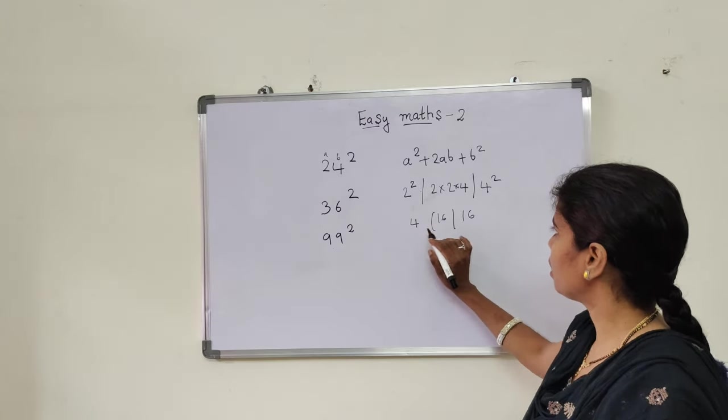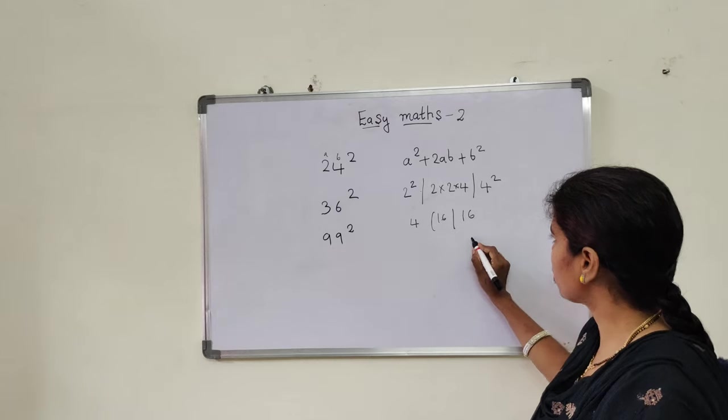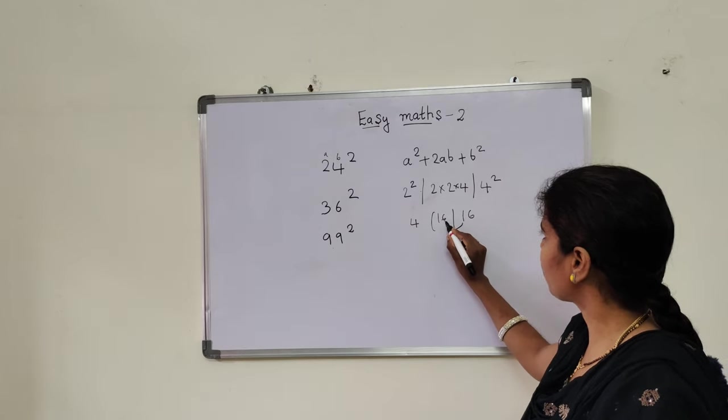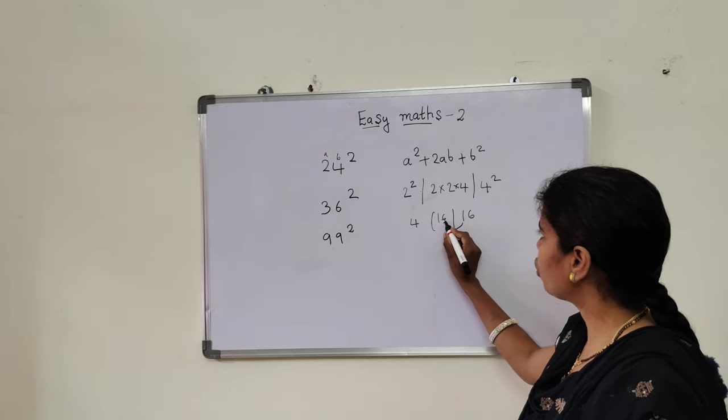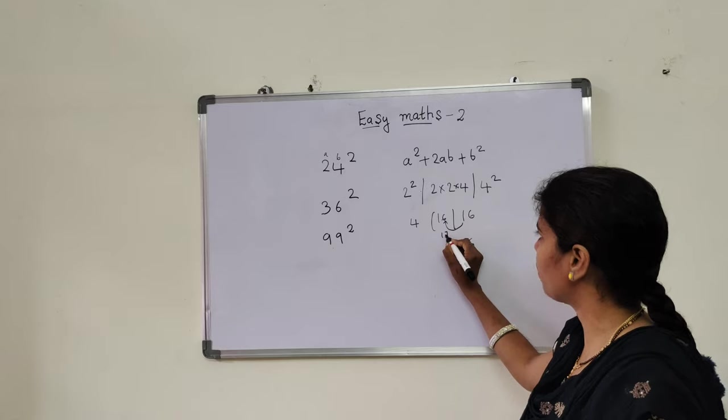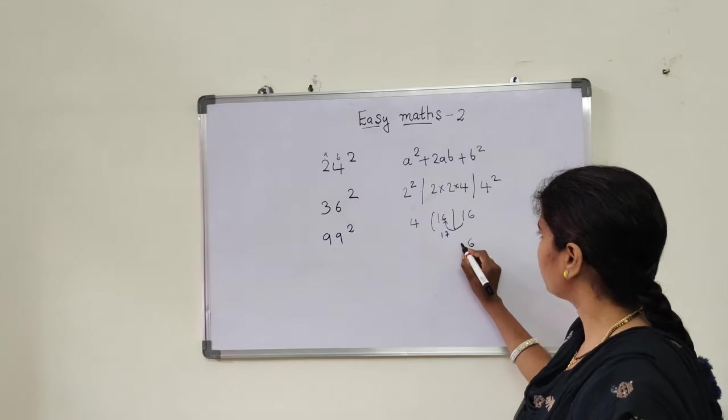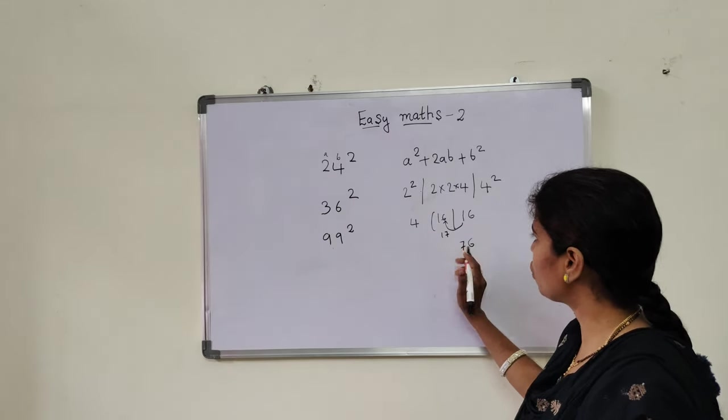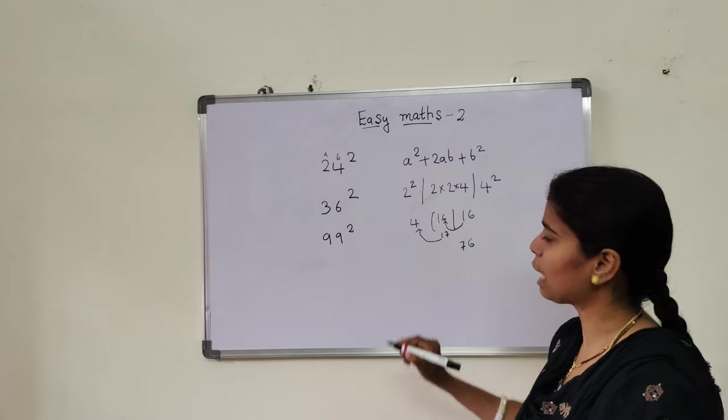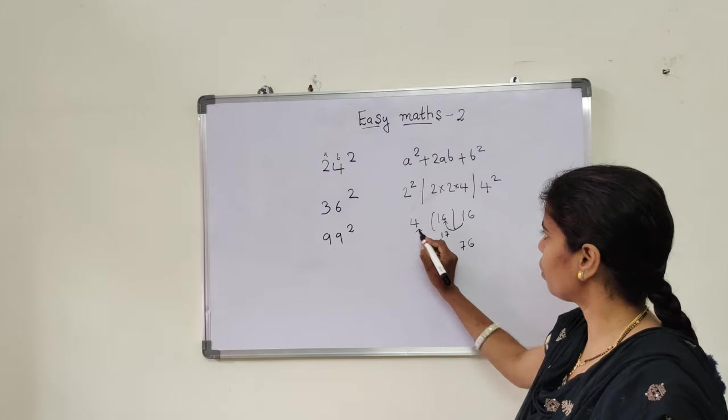See? Now, 16. See, don't write like this. Just write 6 and transfer this one to here. So one you are adding to here, so it will become 17. Now write 7 here. Only one digit only you write, and next one you will be transferring here. 1 plus 4, 5.